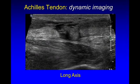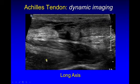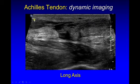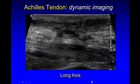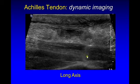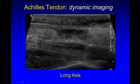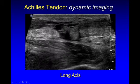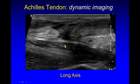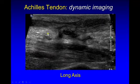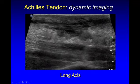Dynamic imaging is very helpful in this scenario. With the patient lying on their stomach, if you dorsiflex and plantarflex the foot, you'll bring out retraction of one tendon stump compared to the other tapered end, confirming a full thickness tear. At the medial aspect, this intact tendon is the plantaris, which should not be misinterpreted as intact or spared Achilles tendon fibers. The FHL, or flexor hallucis longus, is also visible, and the echogenic triangle here is Kager's fat pad.